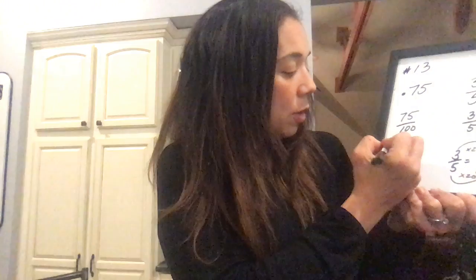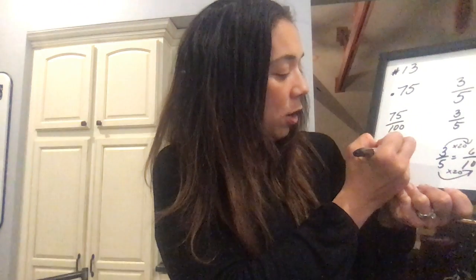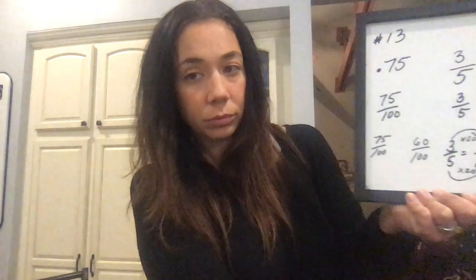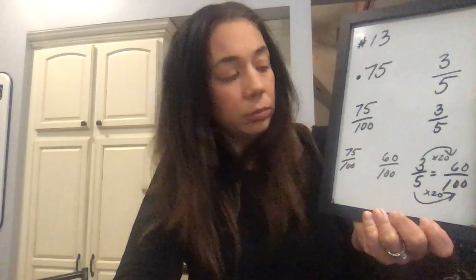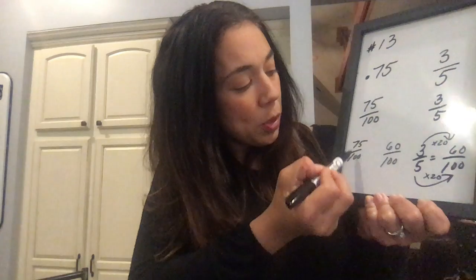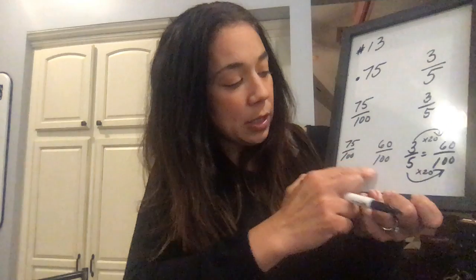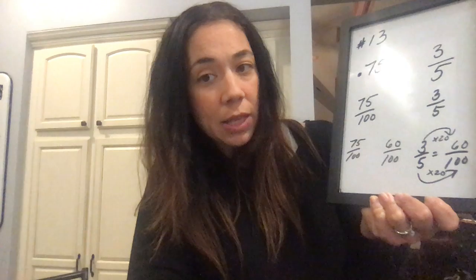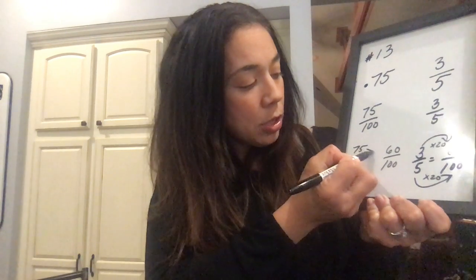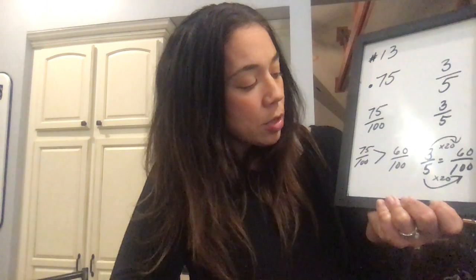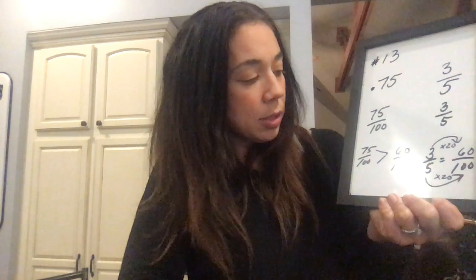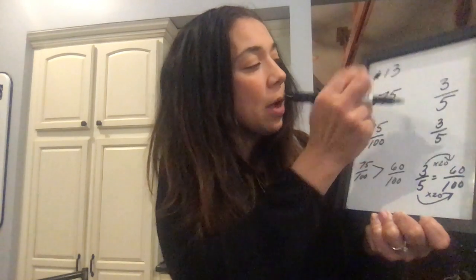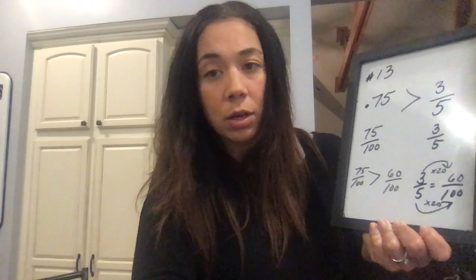Now we are comparing 75 hundredths to 60 hundredths. Because they both have the same denominator, we can compare just the numerators: 75 is larger than 60, so 75 hundredths is larger than 60 hundredths, which means 0.75 is greater than 3 fifths.